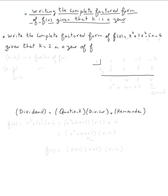The topic here is writing the complete factored form of a polynomial f of x given that k is a zero. So let's do the example. We need to write the complete factored form of f of x equal x cubed plus two x squared minus five x minus six, given that k equal two is a zero of f.